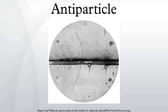Positron paths in a cloud chamber trace the same helical path as an electron but rotate in the opposite direction with respect to the magnetic field direction, due to their having the same magnitude of charge-to-mass ratio but with opposite charge and, therefore, opposite sign charge-to-mass ratios. The antiproton and antineutron were found by Emilio Segre and Owen Chamberlain in 1955 at the University of California, Berkeley.